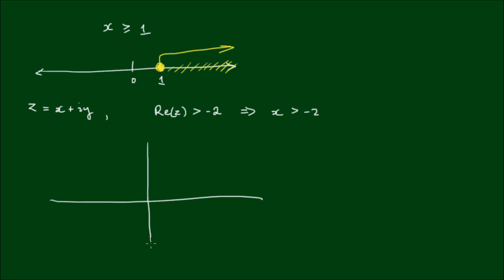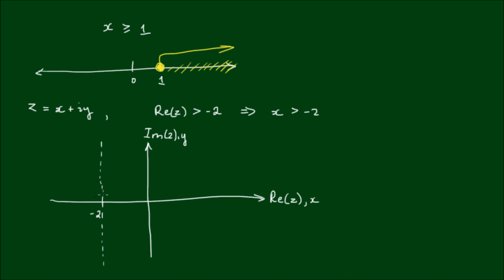On the complex plane, with the real part on the horizontal axis and the imaginary part on the vertical axis, the number negative 2 can be placed on the real axis. I can express the relationship that the real part is greater than negative 2 by drawing a dashed vertical line at x equals negative 2, because the dash means x can't actually take on the value of negative 2, but it can take on anything in the shaded region.